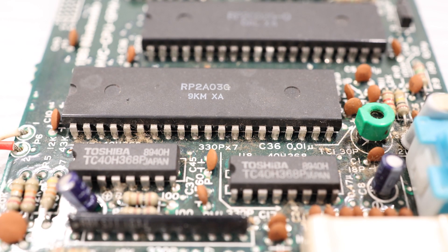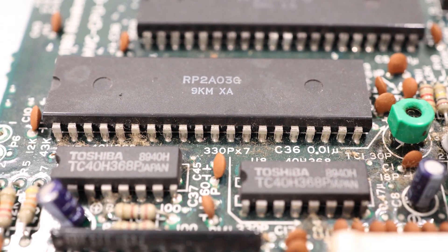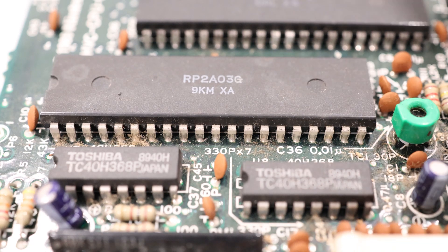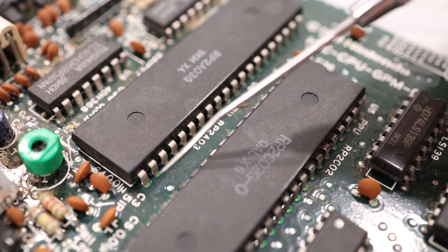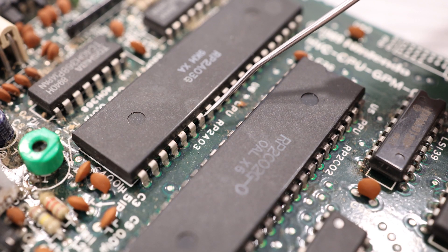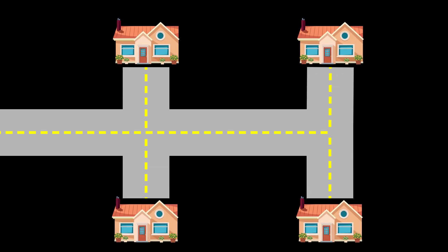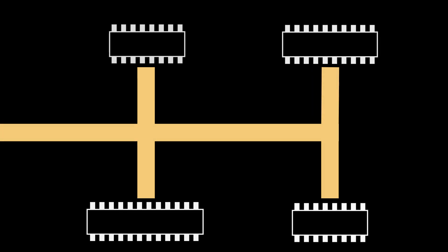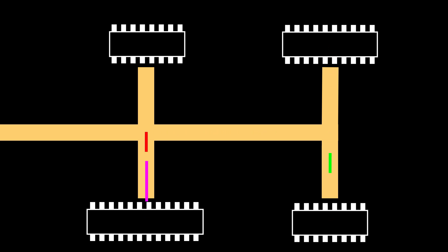In the last video, I pointed out that the Ricoh processor has a set of 16 pins that are on this system's address bus, and a separate set of 8 pins that are connected to the data bus. Now, a bus is like a roadway. Similar to how a road connects houses in a neighborhood, any chip that's on the bus is physically connected to other chips that are also on that same bus, and this lets the two chips talk to one another.